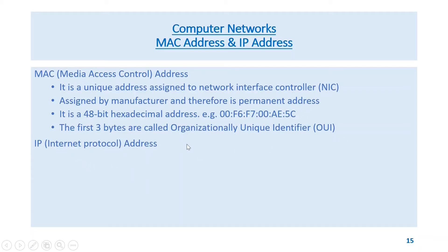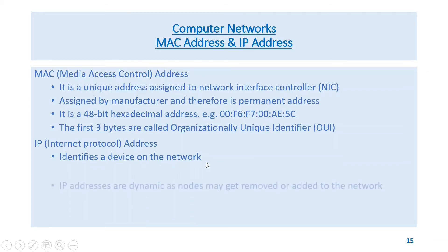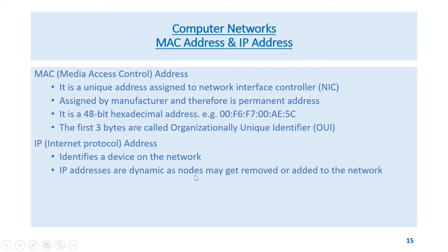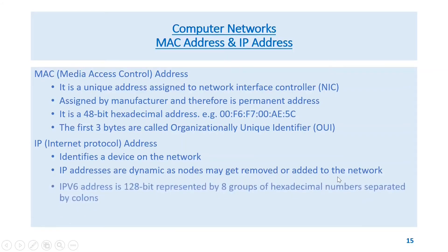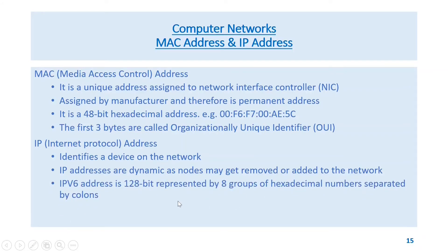Internet Protocol (IP) address identifies a device on the network. IP addresses are dynamic as nodes may get removed or added to the network. IPv6 address is 128-bit, represented by eight groups of hexadecimal numbers separated by colons.